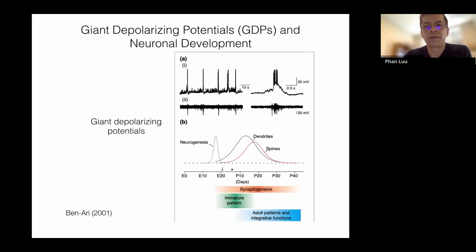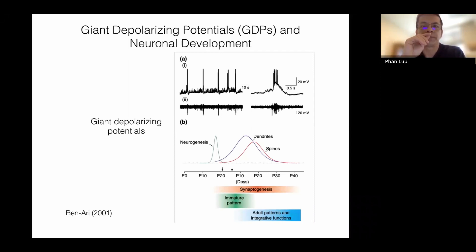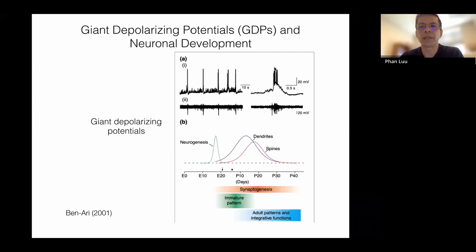The delta waves or slow waves of the tracé alternant — the delta brushes — seem to represent what are known as giant depolarizing potentials, or GDPs. In the extracellular space you can see the slow frequency and these little bursts. Along the axis of neuronal proliferation and growth, GDPs have been found to promote synaptogenesis. As the brain develops, the pyramidal cells that generate recordable EEG from the cortex mature with dendrites extending into the upper layers of the cortex. It is the GABAergic interneurons whose spontaneous activity is recorded as GDPs.